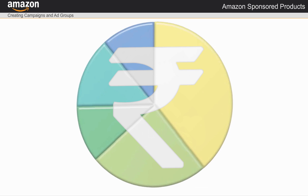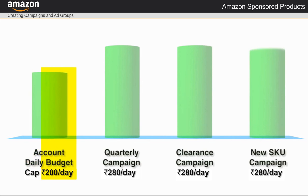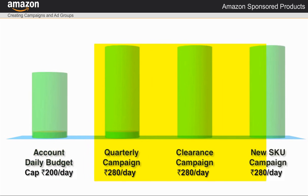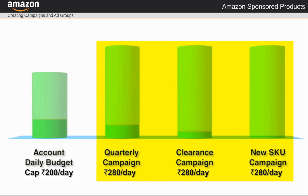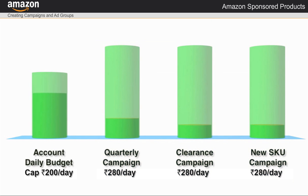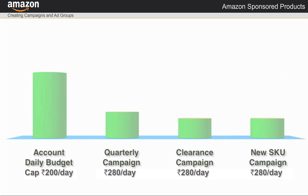For instance, if I enter a value of rupees 200 here and I have several campaigns with a daily budget of rupees 280, then all of my campaigns will stop running when my daily spend across campaigns reaches rupees 200, and I lose opportunities to target searches with my ads.